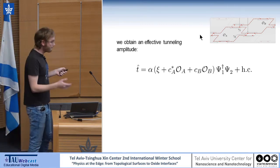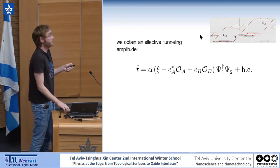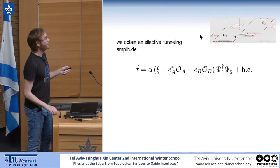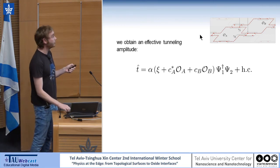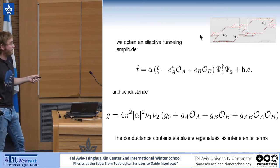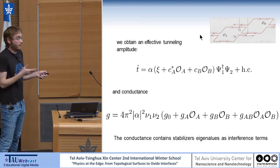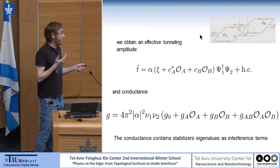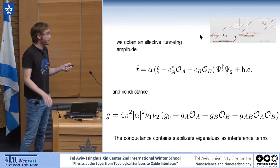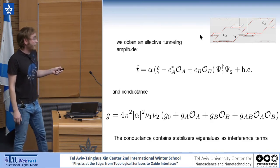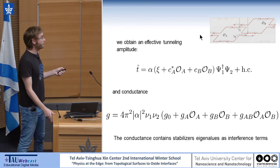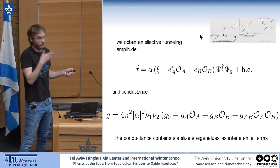If we measure the current in the system — a very simple scheme to measure the current between these two leads — we square this amplitude and obtain a conductance that contains both eigenvalues of qubit O1 and qubit O2 as interference terms. This is a very practical way to read out the values of these two operators. This is actually a projective measurement, and a very practical and simple way to do it. This is a basic element of the surface code — how to measure them repetitively.